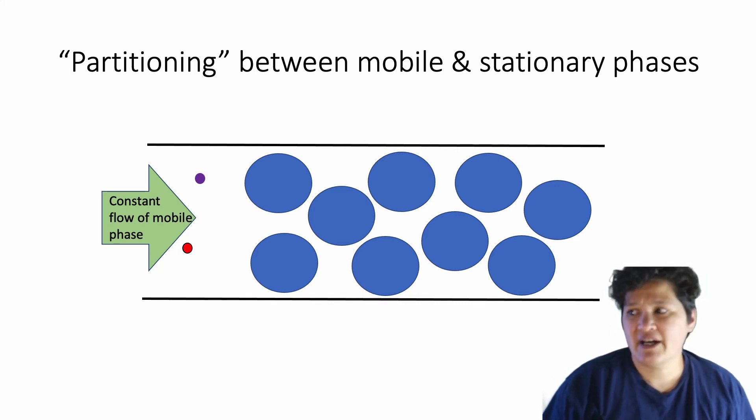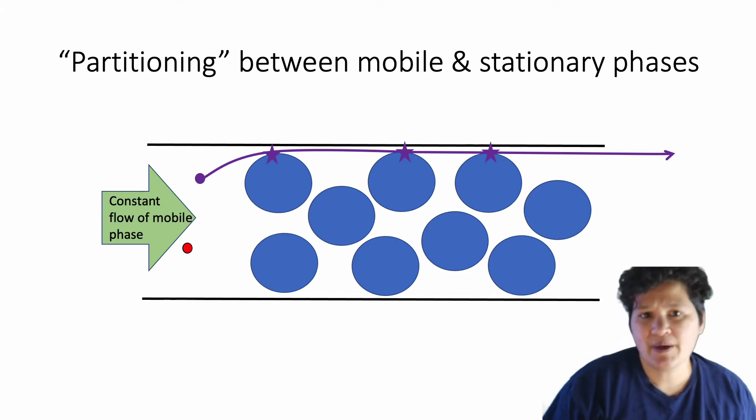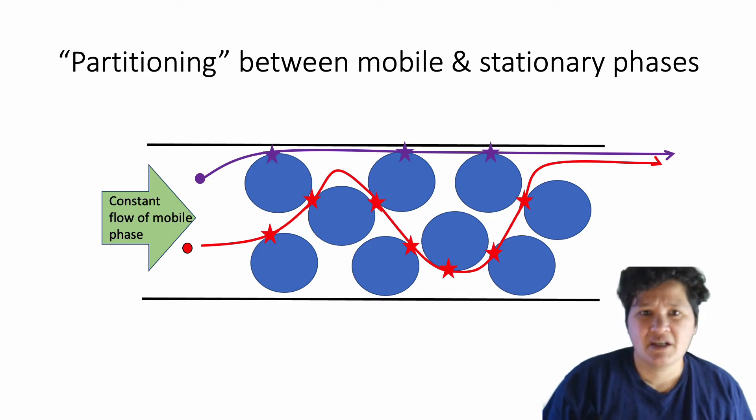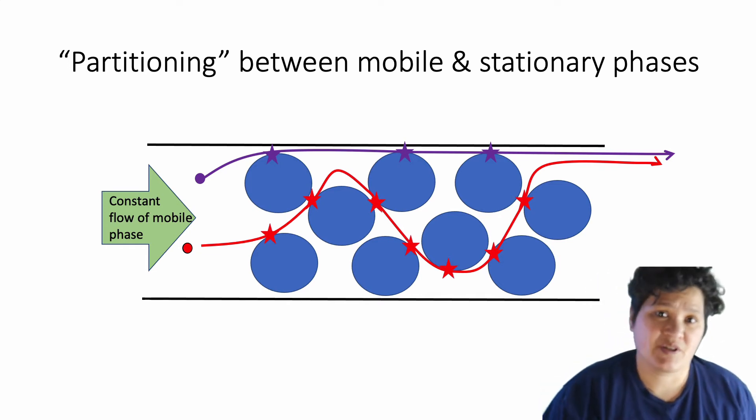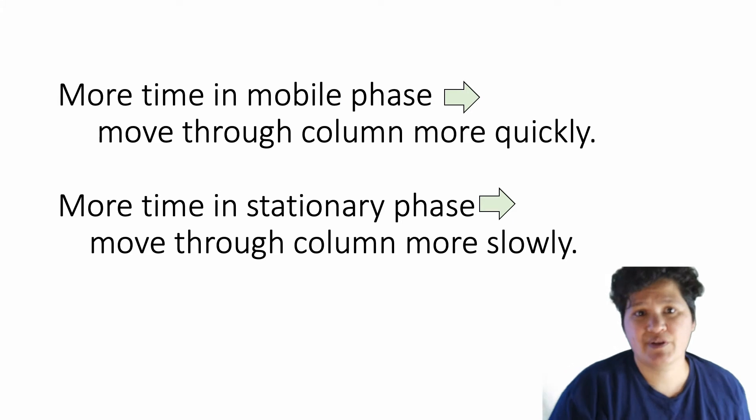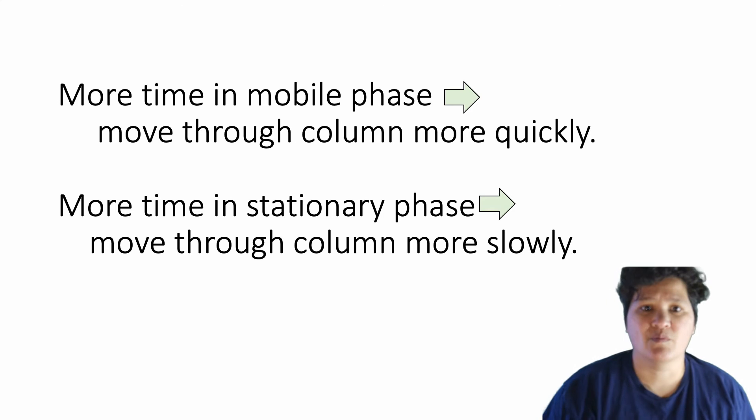The purple molecule gets injected near the outside of the column. So its path is relatively straight, and it only interacts with three of our packing beads. By contrast, our red molecule is moving down the center of the column, and because its initial path goes straight into a bead, it ends up taking a winding route through the column, during which it interacts with the beads seven times. So obviously the purple molecule is going to get through faster, and the red molecule is going to go through slower. More time spent in the mobile phase means an analyte moves through the column quickly. More time spent in the stationary phase means an analyte will move through the column more slowly.